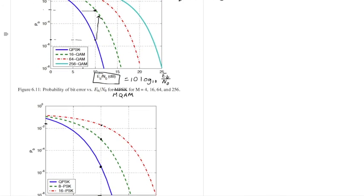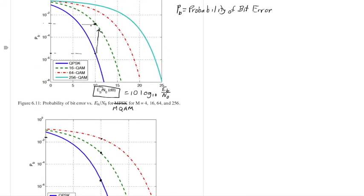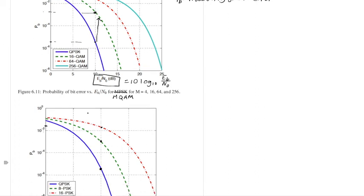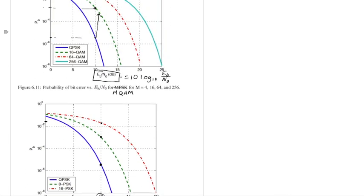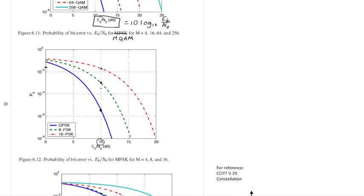Whereas previously for 16-QAM, the probability of bit error was much lower. So for the same M, I can achieve a lower probability of error using M-QAM rather than M-PSK.